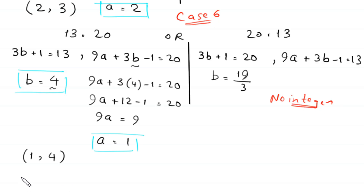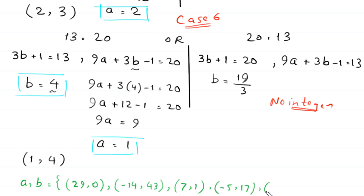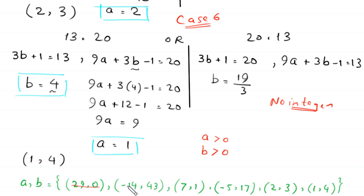So all pairs of solutions (a, b) are: (29, 0), (−14, 43), (7, 1), (−5, 17), (2, 3), and (1, 4). Because a must be greater than 0 and b must be greater than 0, we reject (29, 0), (−14, 43), and (−5, 17). The valid positive integer solutions are (7, 1), (2, 3), and (1, 4).